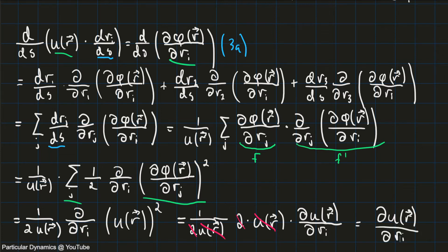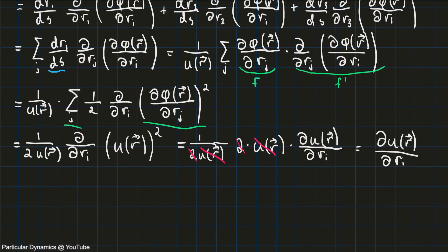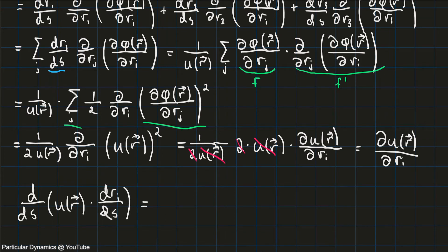So now to restate: since we've been deriving the right-hand side of the Eikonal equation all this time, we take the left-hand side of the original equation — the derivative of the kinematic ray equation — and on the right-hand side we use our result, which is the partial differential of u of r with respect to ri. I'm going to call this equation 3b.